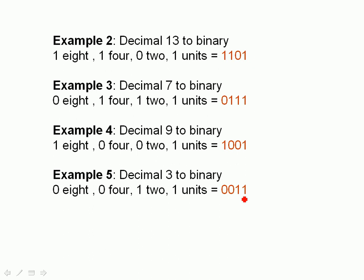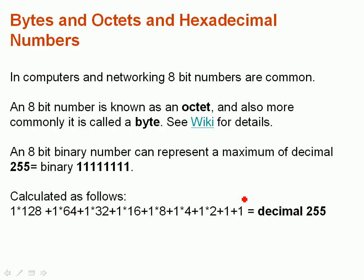And we've been using some 3 and 4 digit numbers. In computers and networking, we use 8-bit numbers, and we're going to look at 8-bit numbers now. They're commonly known as a byte, also as an octet, and there's a wiki article. If you look it up, I'll provide the link in the video details or description. Byte is the more commonly used term, but octet is, according to wiki, more accurate. I tend to use bytes. The largest number we can have is all 1s, which is equivalent to decimal 255. And it's calculated as 1 times 128, 1 times 64, 1 times 32, etc., all the way down to 1, giving you decimal 255.